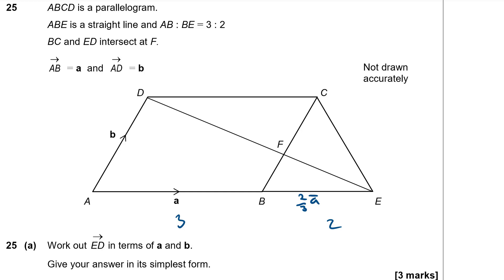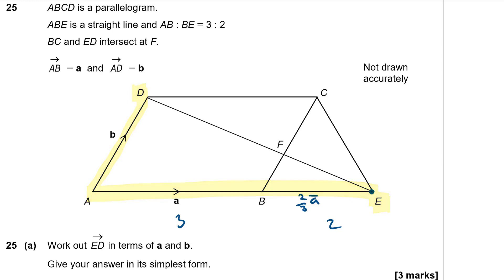It also says that BC and ED intersect at F. I'm sure we're going to have to use something to do with that a bit later on. But first off we just need to work out the vector E to D. Here's E down here and here's D up here. With vectors we need to go along routes that we know about. So getting from E to D, I'm going to have to go this way along here and up there. That's the route I need to go.